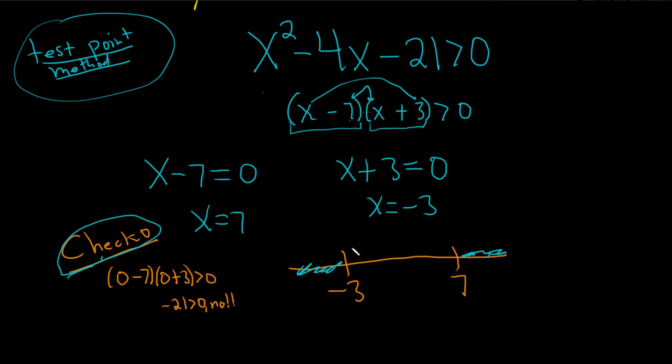It's a greater than, so we have parentheses. And now we can write the answer from the picture. Negative infinity to negative 3, union, and then 7 to infinity. And then that would be the domain of our function.